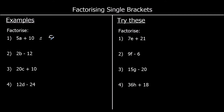So we take 5 outside the bracket. Then we ask: 5 times what would make 5a? 5 times a would make 5a. And 5 times what would make 10? That would be positive 2. So if we expanded this again, we get 5 times a which is 5a, and 5 times 2 which is 10.